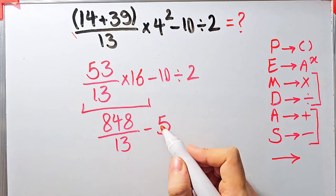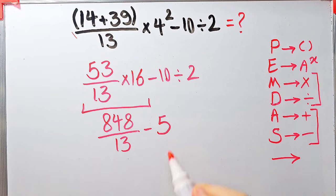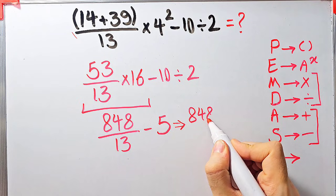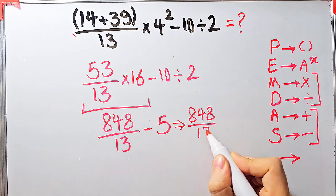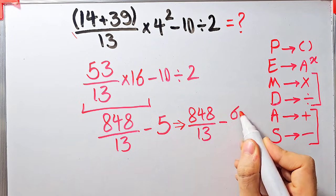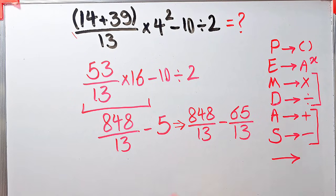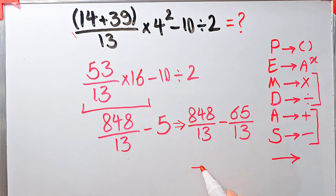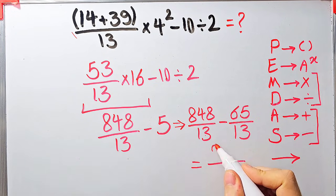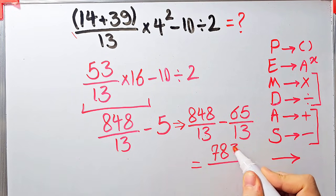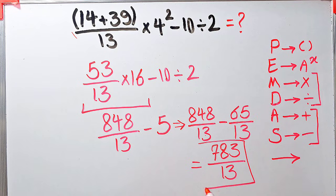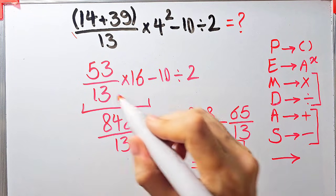Since the denominator of the fraction is 13, we can write 5 as 65 over 13. Now we have 848 over 13 minus 65 over 13. 848 over 13 minus 65 over 13 equals 783 over 13. The final answer of this question equals 783 over 13. Let's solve another question about the PEMDAS rule.